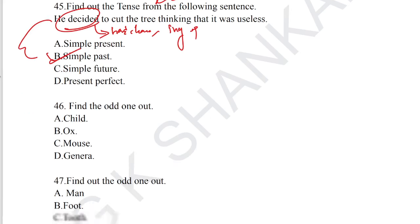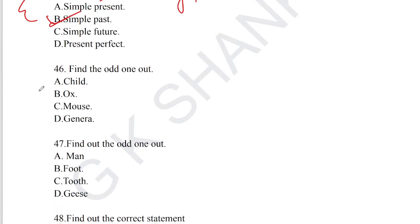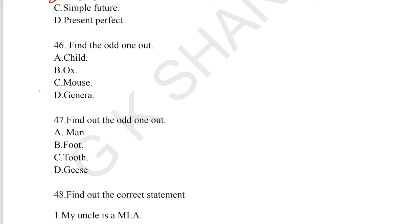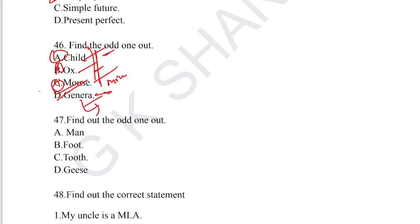Question number 46: find out the odd one out. Child, ox, mouse are singular forms — their plurals are children, oxen, and mice respectively. Options A, B, and C are plural forms. However, 'genera' is the plural form of 'genome', while the others are singular. Option D, genera, is the odd one out and the correct answer for question number 46.